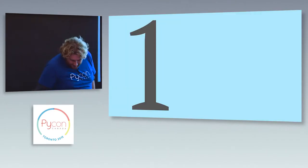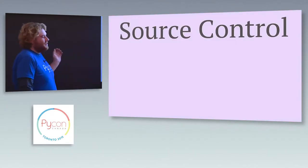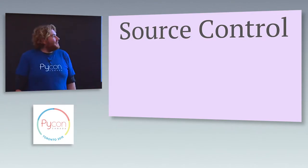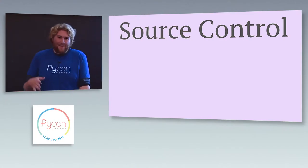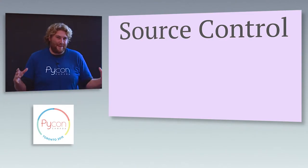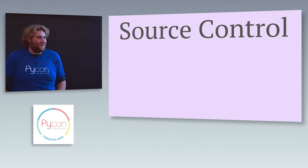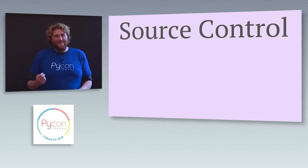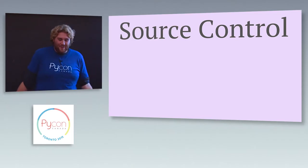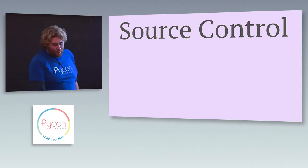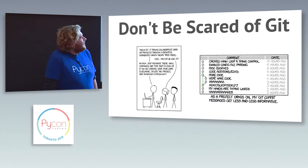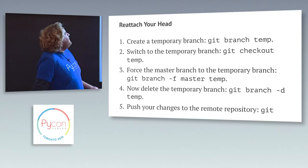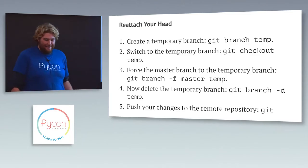Number one: source control. Have a unified place where all your code is. That's kind of simple now with GitHub, and if you want to go the open source route and make sure everything's open source, GitLab is also good. I suggest Git mainly because it is now our industry standard source control, which is sad because it is a horrible, horrible system — but you really shouldn't be afraid of Git. As an example, here are five steps to reattach your head, if that ever happens.